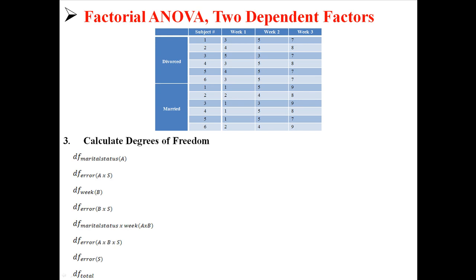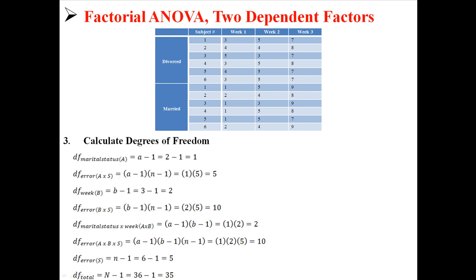Here are our eight degrees of freedom and their equations. I'm using capital N, which is six because there are six scores in each cell — depending on your class, they might use lowercase s or n, but I mean the same thing. We calculate our eight different degrees of freedom, and you can see they all add up to 35, so we know we did it right.